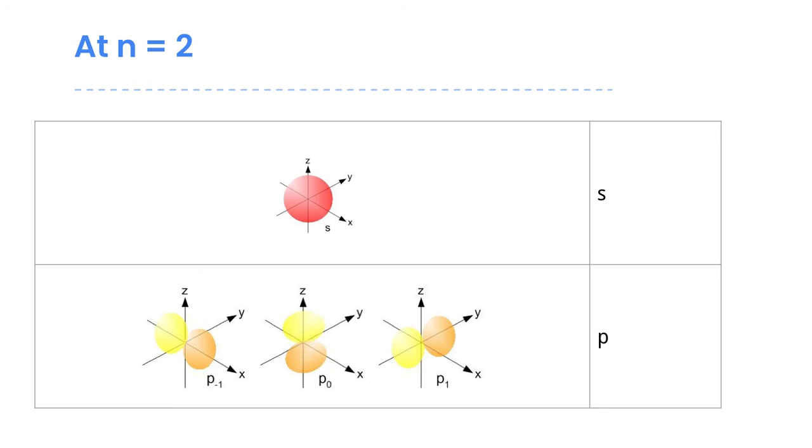Our second energy level has two different types of orbitals, two different types of sub levels. The first is there is another s. It's bigger than the 1s orbital because it's further away from the nucleus, but it still has that spherical shape. If we're talking about it at n equals 2, we refer to that as the 2s orbital.